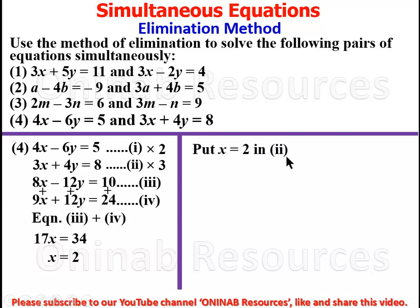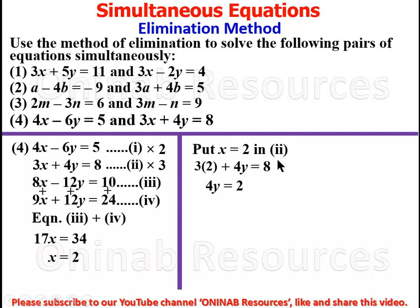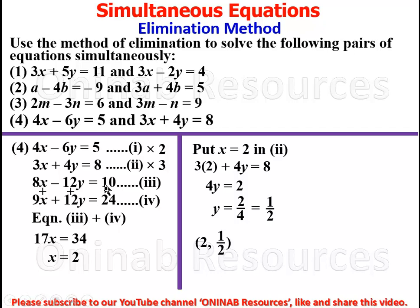We substitute x equal to 2 in equation 2. So 3 times 2 plus 4y equal to 8 gives 6 plus 4y equal to 8. Moving 6 to the other side: 4y equal to 8 minus 6, which is 2. Dividing both sides by 4, y equal to 2 over 4, which simplifies to 1 over 2. In coordinate form we have (2, 1/2).